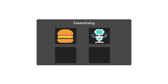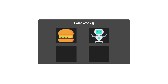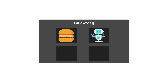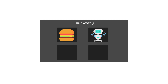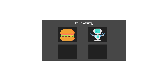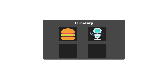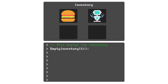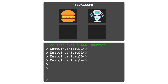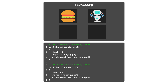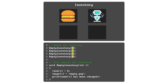For example, say you have an inventory class that can hold four items and you want to remove items. Instead of creating four different methods — inventory.removeItemOne, inventory.removeItemTwo, and so on — that all run the same code minus a variable or two, with functions you can pass in the item number and using the same code remove that item.